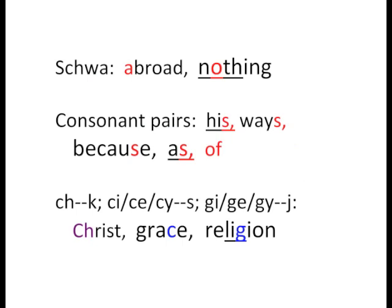As we read through the book of James, look for these colors highlighting the things we have covered: schwa'd vowels will be red, and consonants with their consonant pair sound will be red as well. CH as K will be purple and soft C and G will be blue. Also, syllables and words containing a short vowel are underlined.